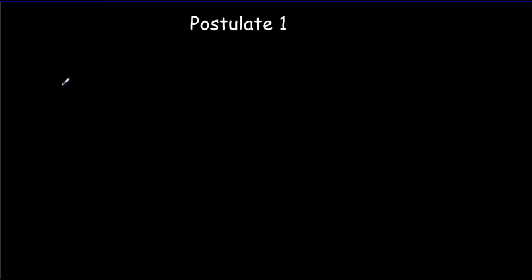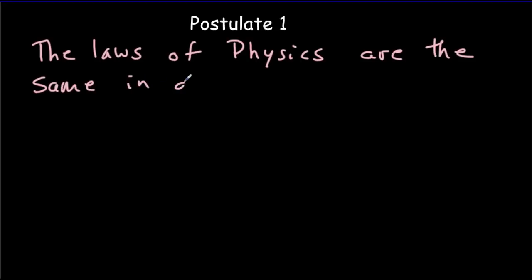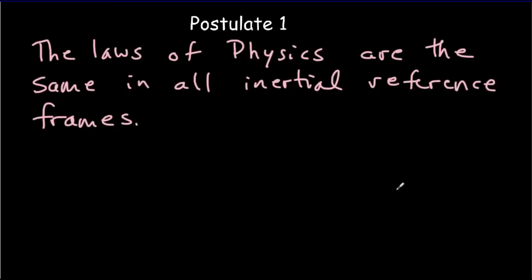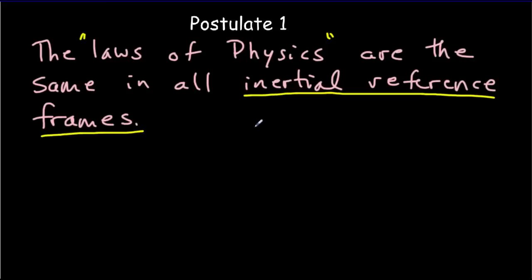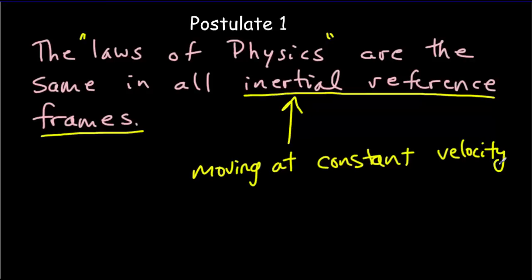So let's write down our first postulate. It simply says: the laws of physics are the same in all inertial reference frames. A very innocent-looking statement. We need to explain what we mean by the laws of physics being the same, and what we mean by an inertial reference frame. An inertial reference frame is just a reference frame moving at constant velocity — no acceleration, no speeding up, no slowing down, no oscillations, no turning. Our frame moves in a straight line at constant speed.